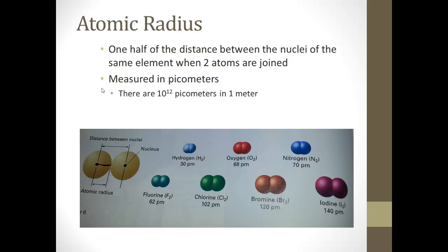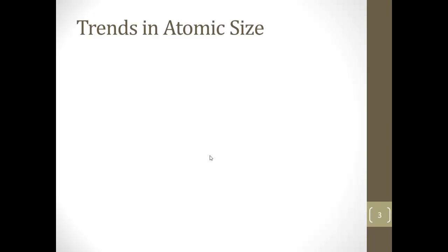There are 10 to the 12th picometers in one meter. So there are a billion picometers in one meter. That's how small these atoms actually are. We can look at some of these here: hydrogen, the atomic radius is 30 picometers, oxygen is 68, iodine is 140. But still, even though it's almost five times the size of hydrogen, it's still incredibly tiny.